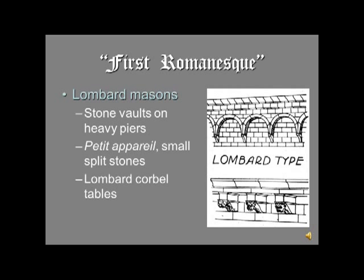A Lombard corbel table is a decorative feature you'll likely encounter. Looking at the diagram, you see at the top a series of small arches underneath a cornice or molding — they add a little thickness to the wall but are primarily decorative. Another characteristic of these early Romanesque churches is that the masons are often using fairly small split stones rather than giant blocks. You'll get great blocks later and all sorts of masonry types, but in the first examples you'll see the smaller stones.